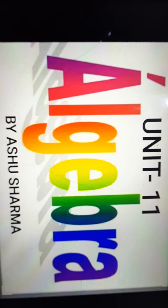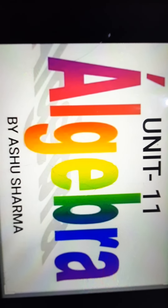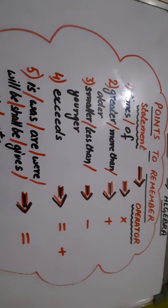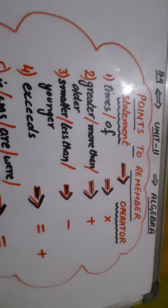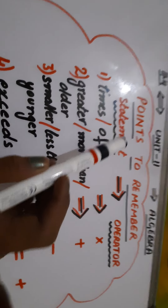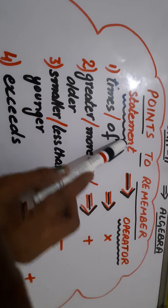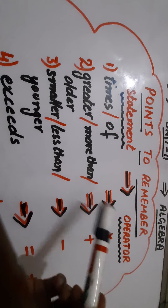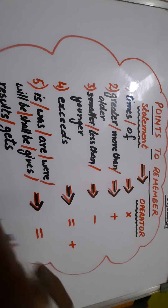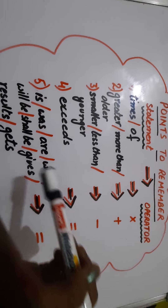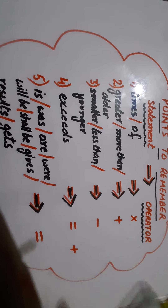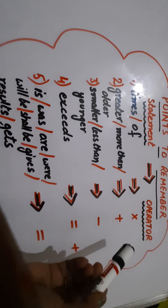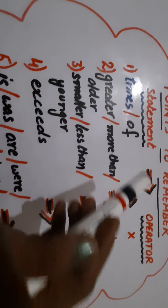Before starting this exercise, I want to introduce you some mathematical operators against the statements. Here you can see these are the points to remember. One column is 'statement' and the other is 'operator'. This table will help you to convert a statement into an expression.